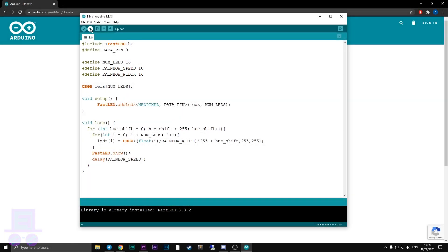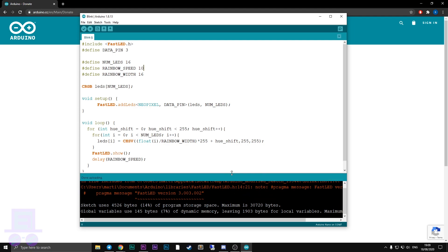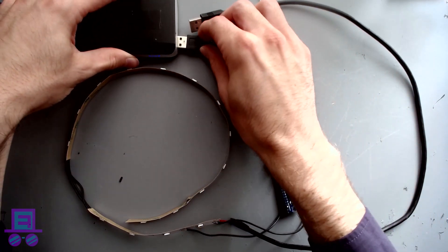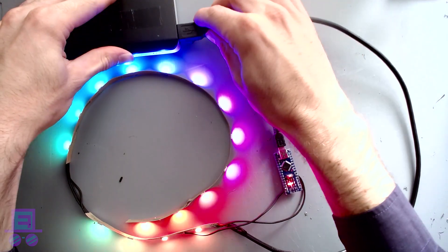Next, upload the program. Once that's complete, we can plug the Arduino and the LED strip into the portable charger and we should be off. Fantastic.